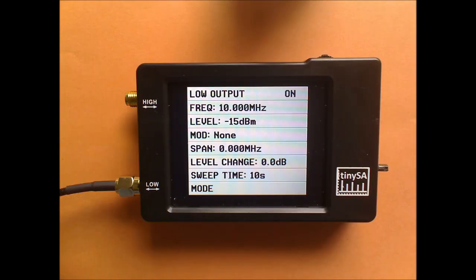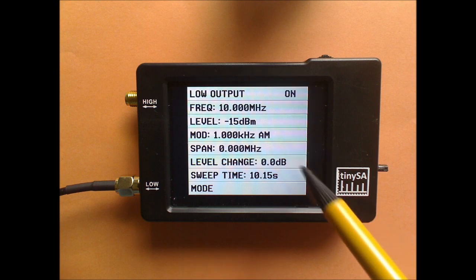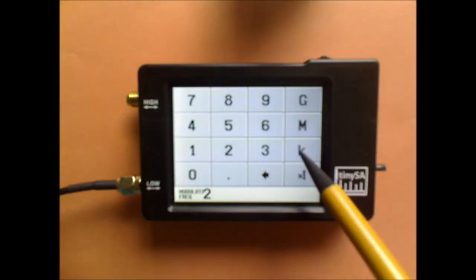The next step is to switch on the modulation so we can analyze. In this case we will be using the AM modulation with a frequency of 2 kHz.